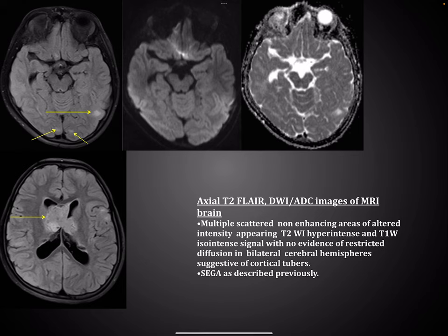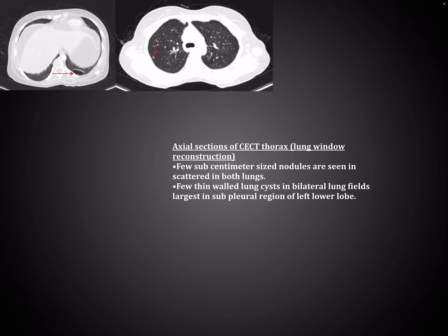Another patient — axial T2 weighted FLAIR, diffusion and ADC images of brain show multiple scattered non-enhancing areas appearing T2 hyperintense and T1 isointense with no evidence of restricted diffusion in bilateral cerebral hemispheres, suggestive of cortical tubers and SEGA. CT findings were also available. Axial sections of CT thorax show sub-centimeter nodules in both lungs, multiple scattered thin-walled lung cysts in the sub-pleural region of the left lower lobe — a case of lymphangioleiomyomatosis in a known case of tuberous sclerosis.